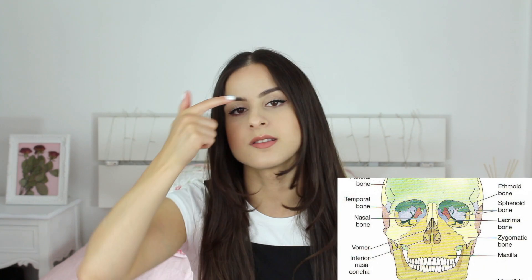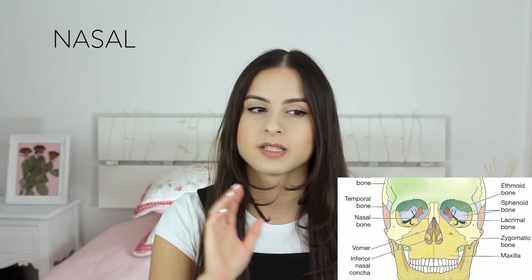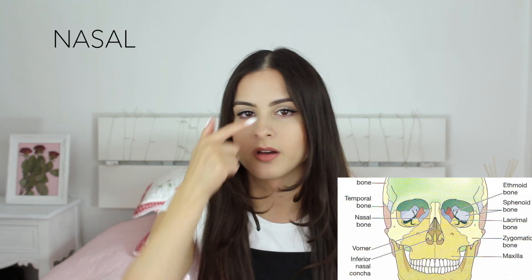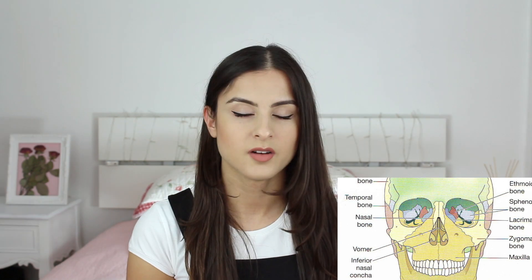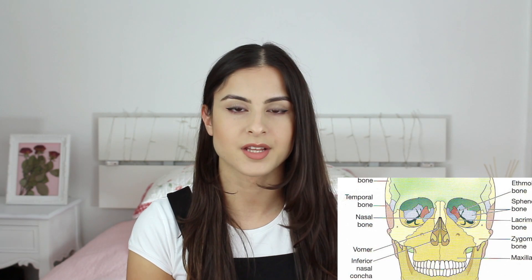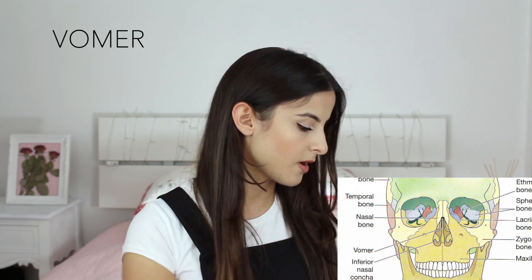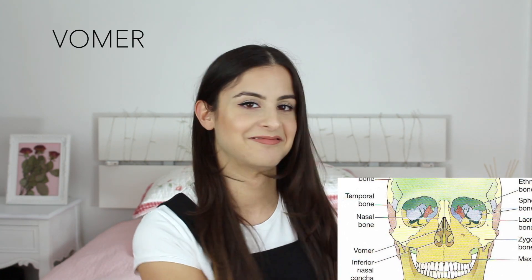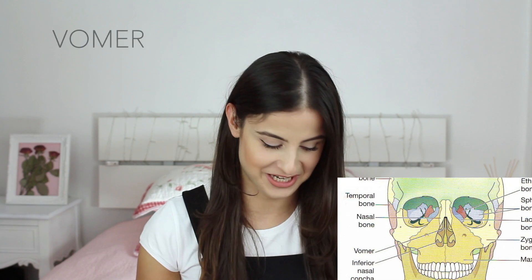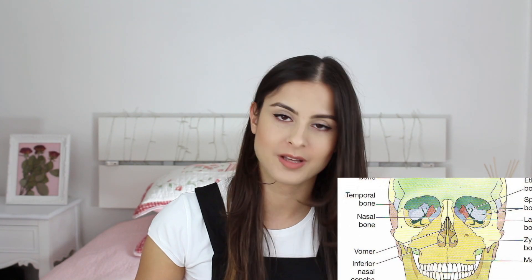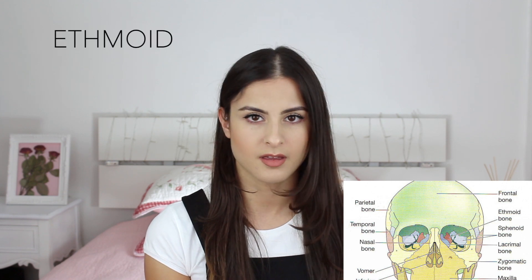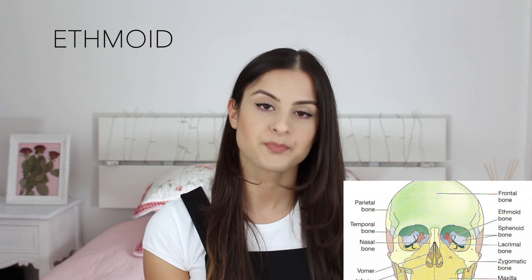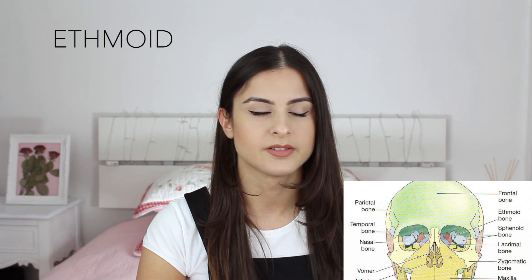Next I like to move on to the face. The next one is nasal — this one is easy to remember, it's just your nose, and the muscle is nasalis. After nasal I like to remember vomer — vomer is one thin bone forming the nasal septum.